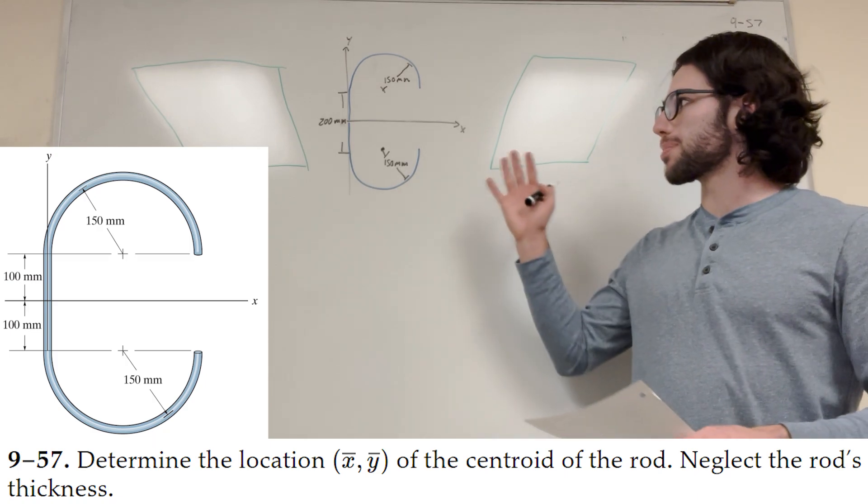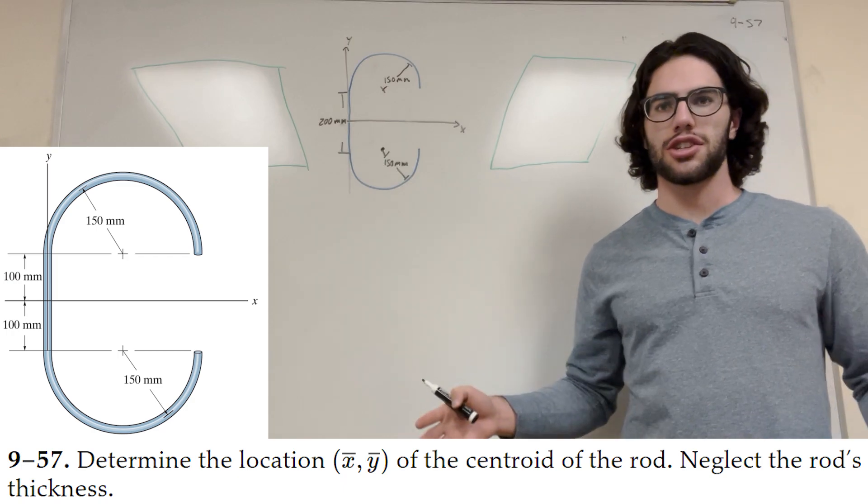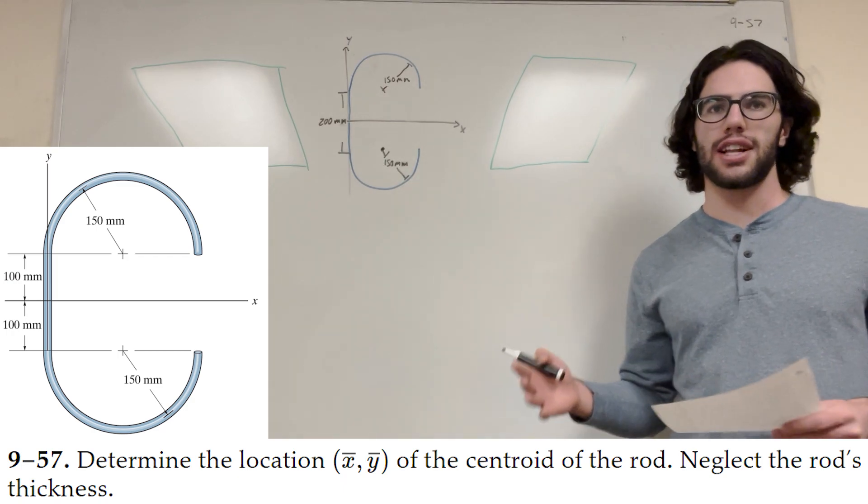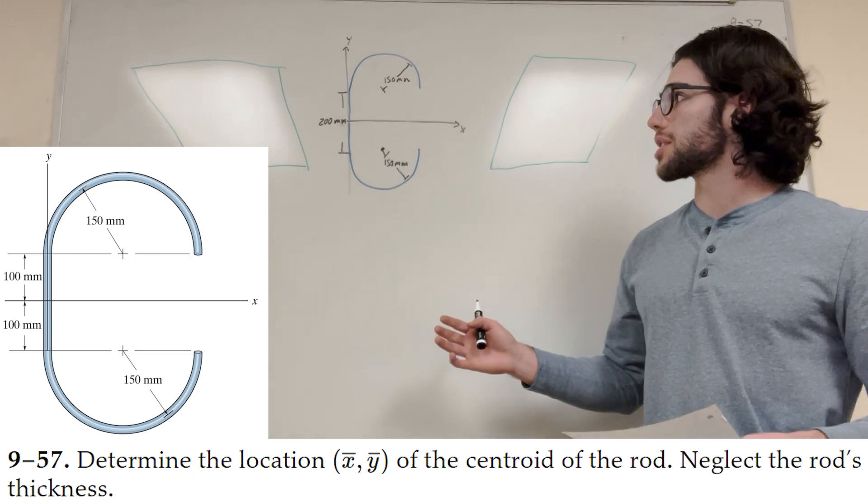What's up, Calc gang! Alright, so today we're doing this problem here. We got this C-shaped rod, and it wants us to find the centroid of the rod. So the centroid, that's x-bar and y-bar, so we're finding the x-center of mass and the y-center of mass. Let's get started.